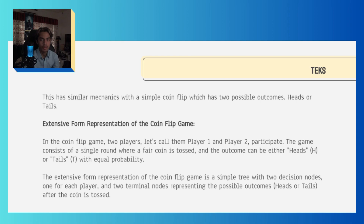Texts has similar mechanics to a simple coin flip game, which has two possible outcomes: heads or tails. In the coin flip game, two players — Player 1 and Player 2 — participate. The game consists of a single round where a fair coin is tossed, and the outcome can be either heads or tails with equal probability. The extensive form representation is a simple tree with two decision nodes, one for each player, and two terminal nodes representing the possible outcomes after the coin is tossed.